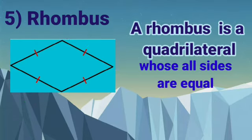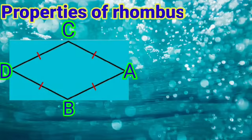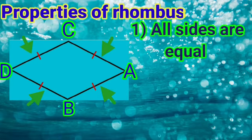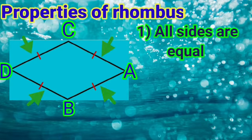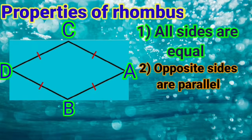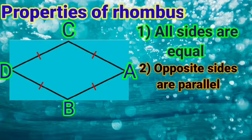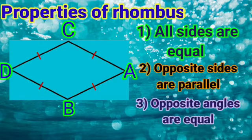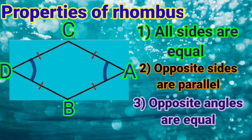Now let's see the properties of rhombus. Number 1: All sides of a rhombus are equal. Number 2: Opposite sides are parallel. And number 3: Opposite angles are also equal.